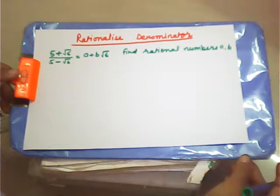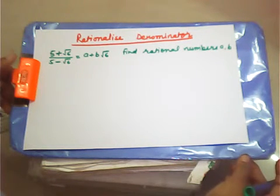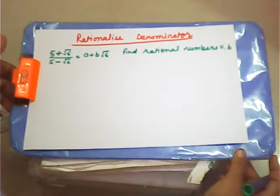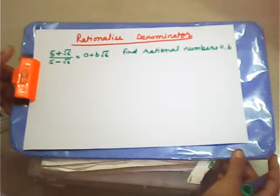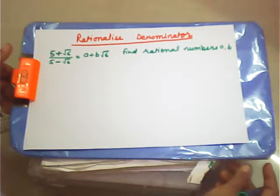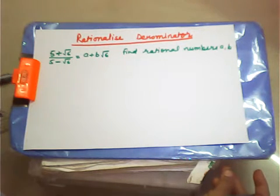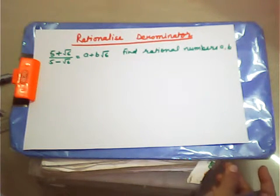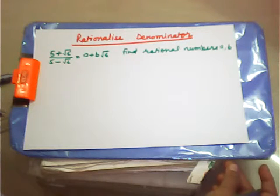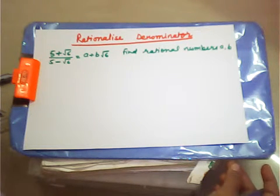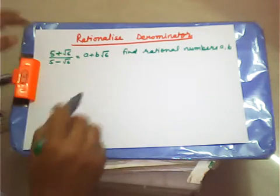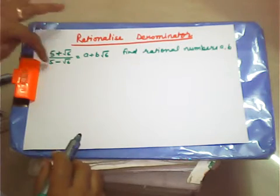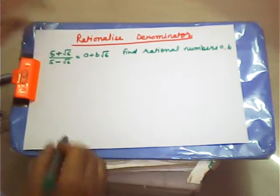Today our topic is rationalizing the denominator. We have the question (5 + √6) / (5 - √6) = A + B√6. Find the rational numbers A and B. First of all, we have to rationalize the denominator.